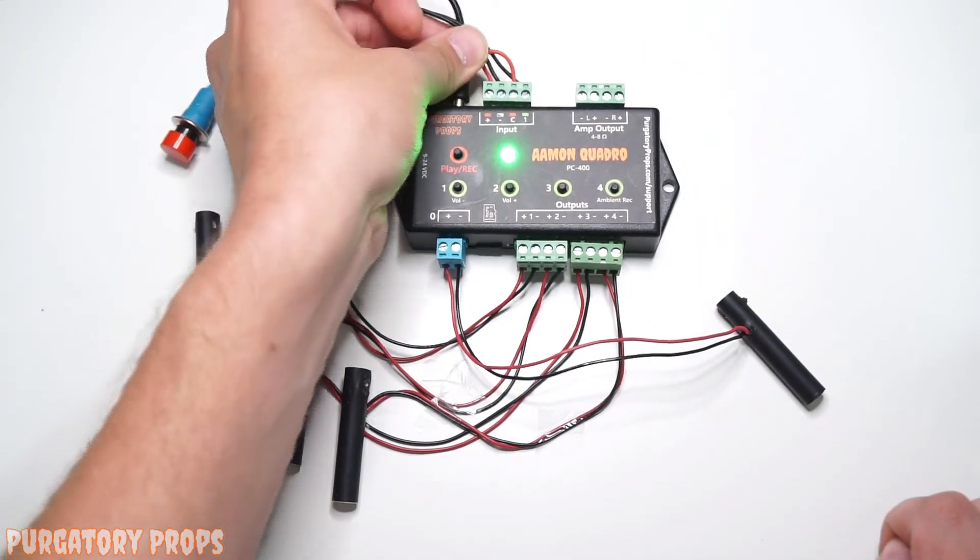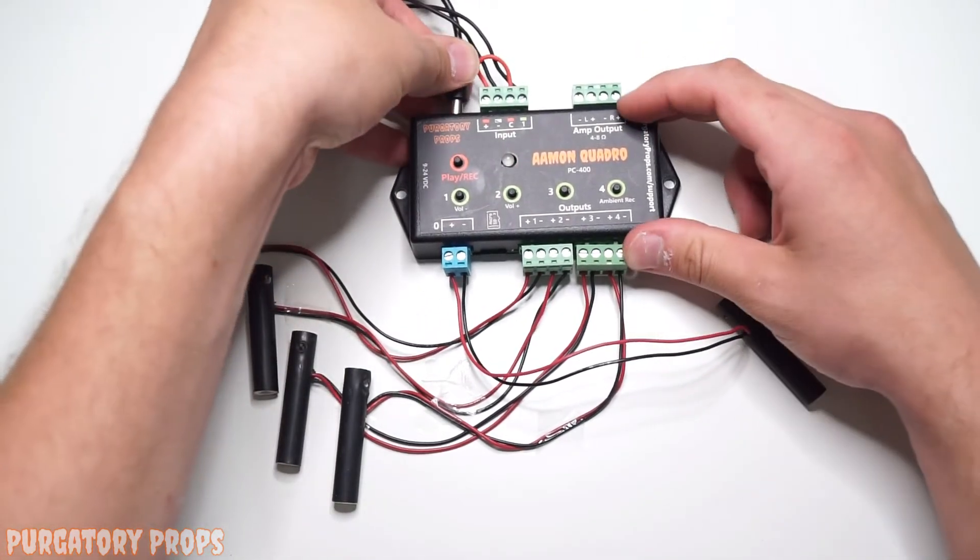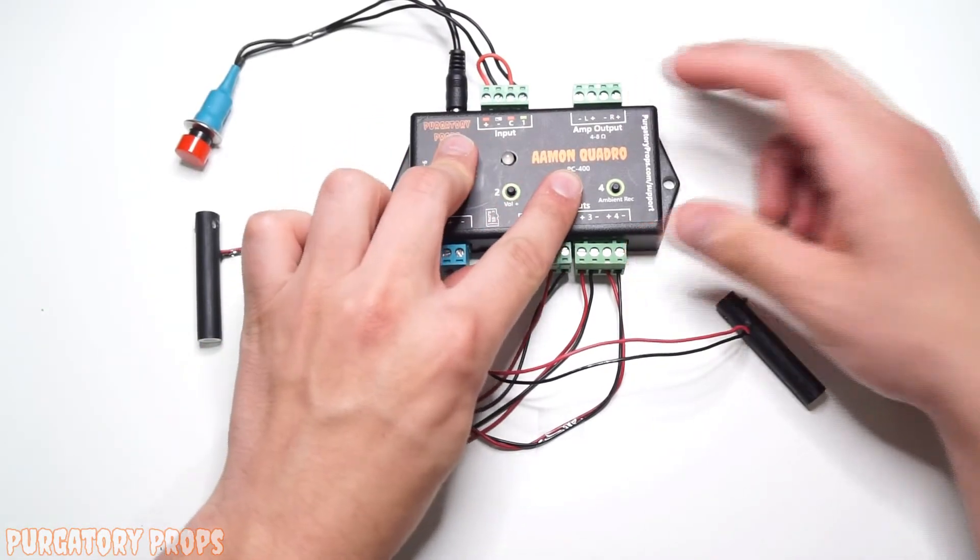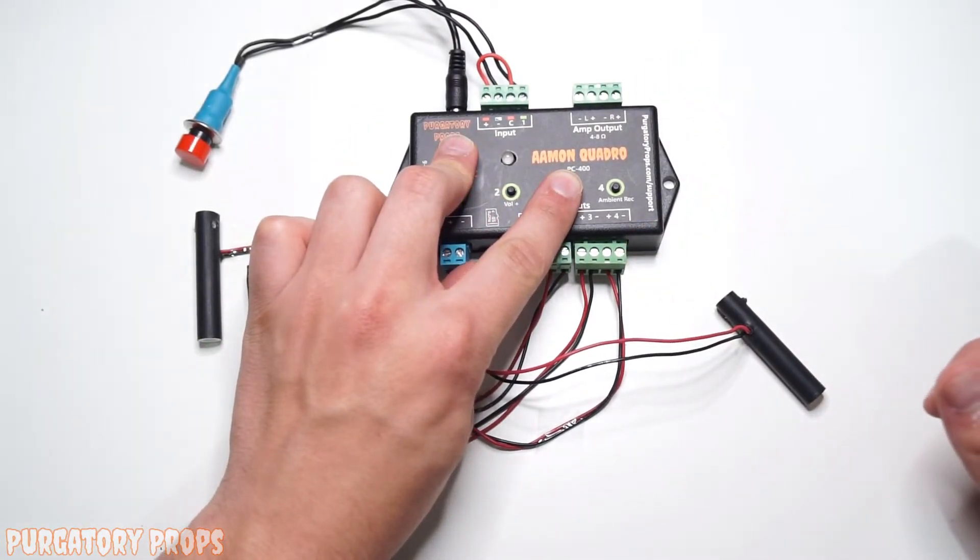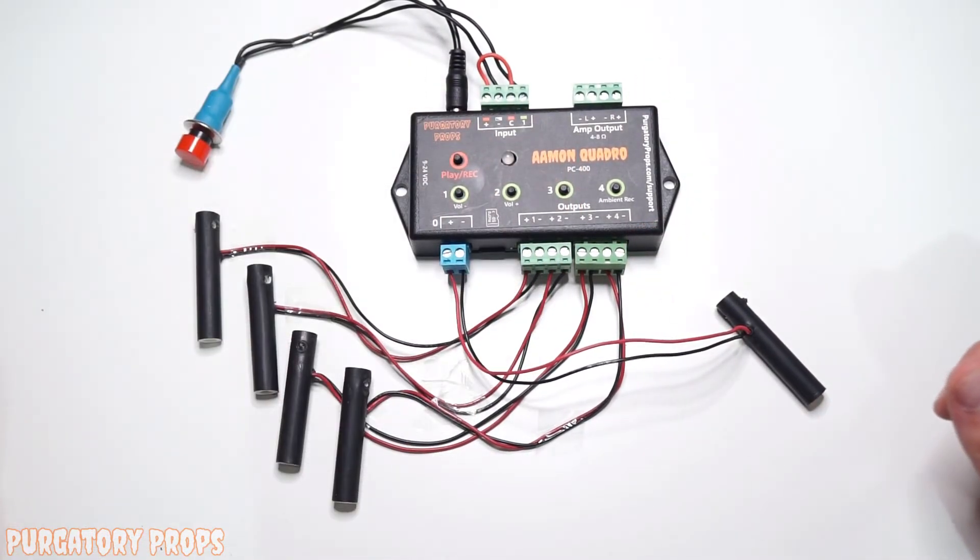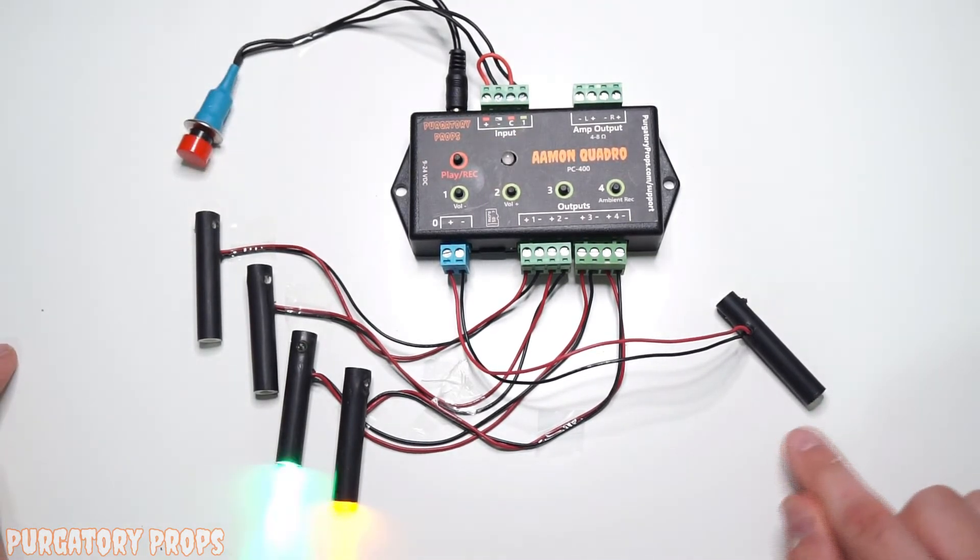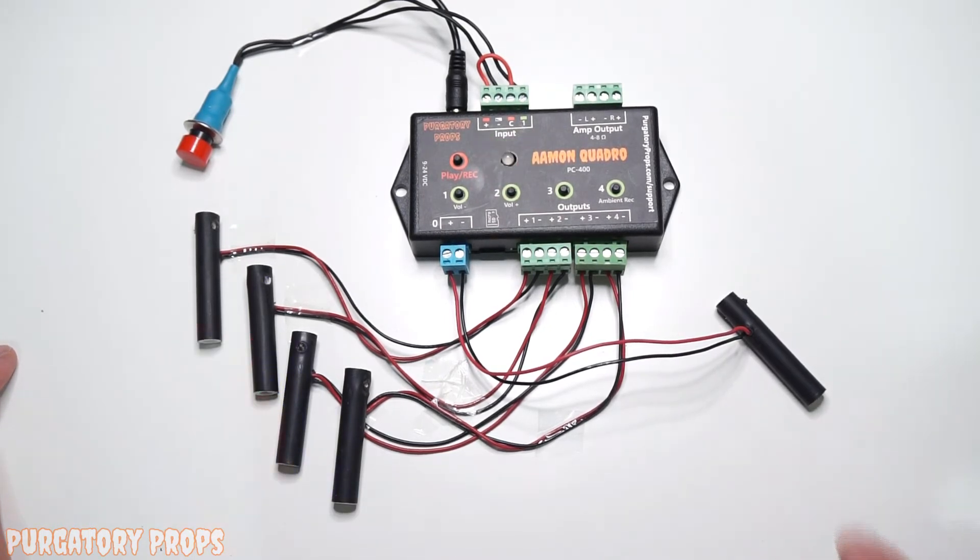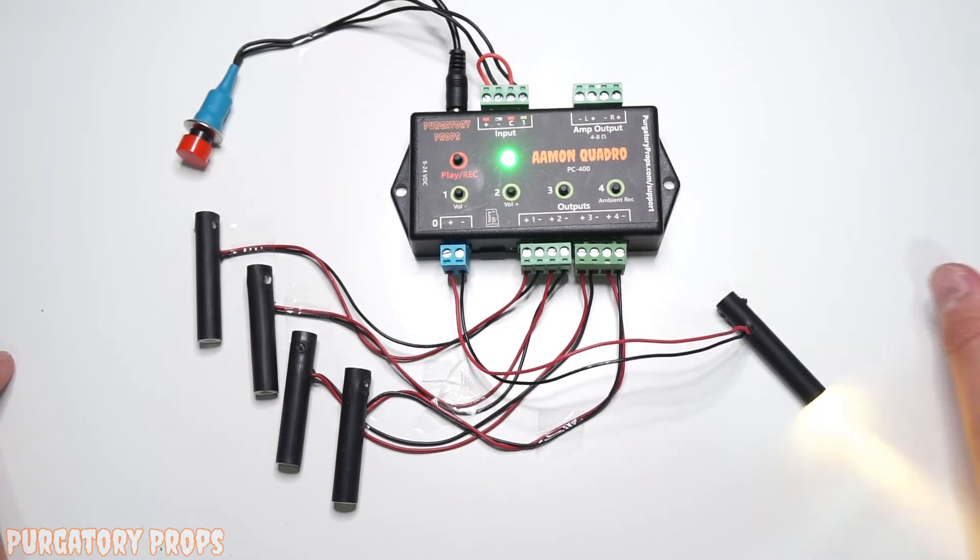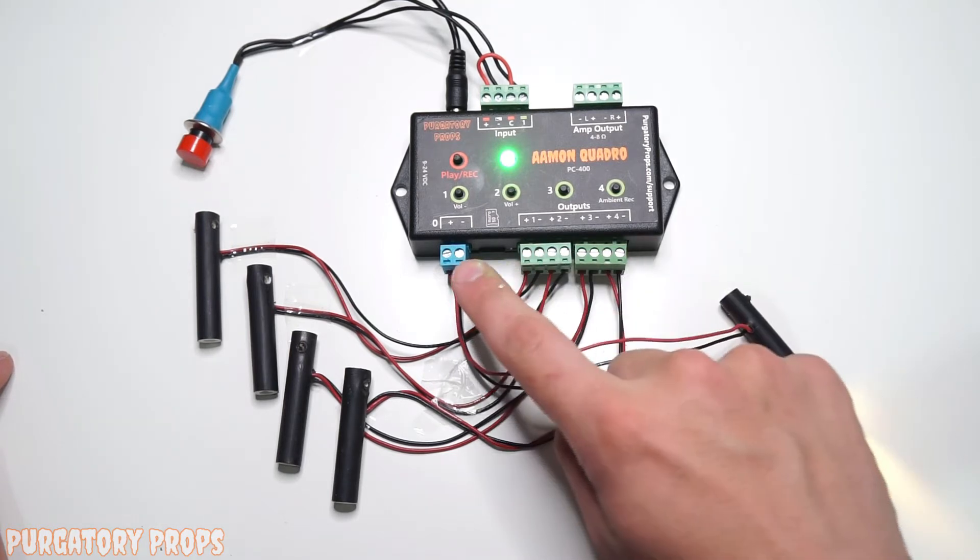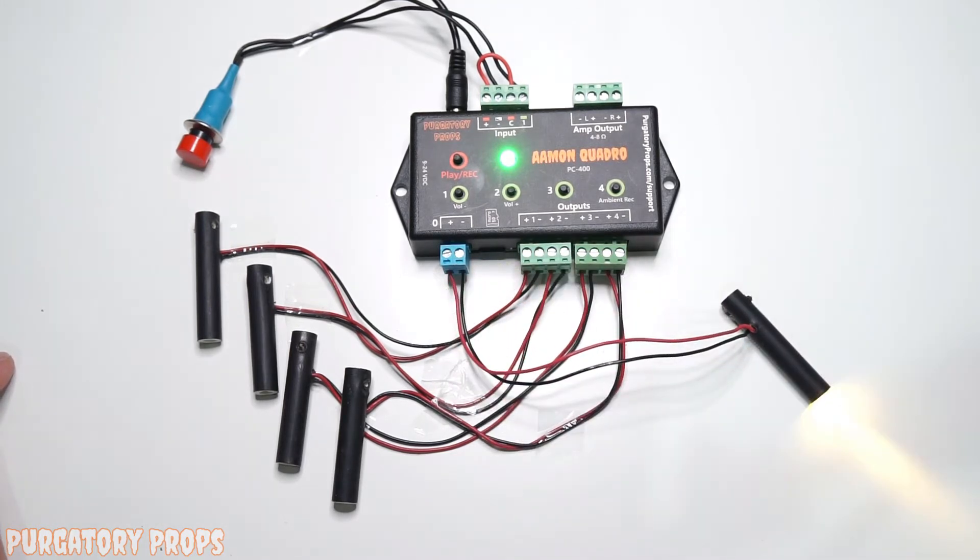If we unplug it again, do the same thing but with play record and button 3. Now it's going to be in end mode. So it's off the entire length of the animation and then will turn on at the end of the animation. So this can be used to daisy chain controllers. So if you have a second Amon Quadro or Amon Duo, you can use this to control the input of that controller.